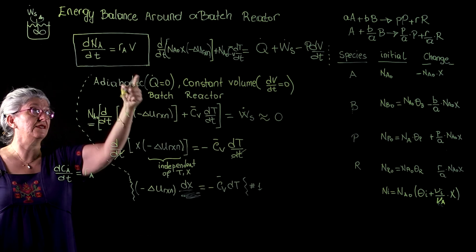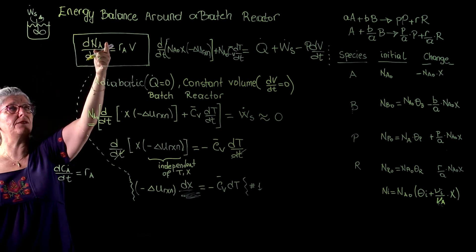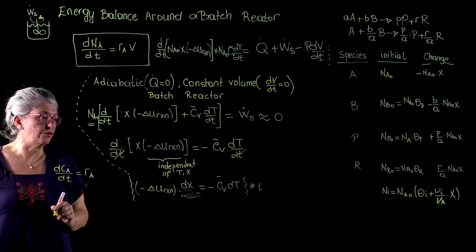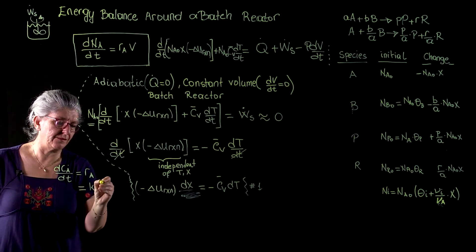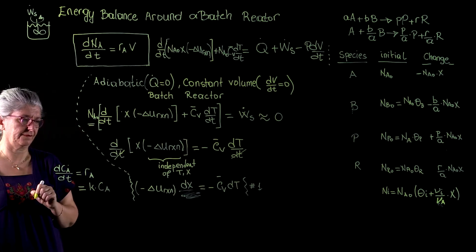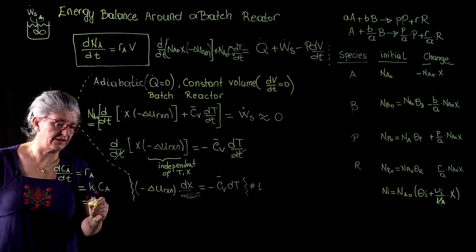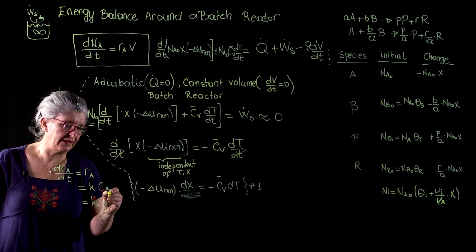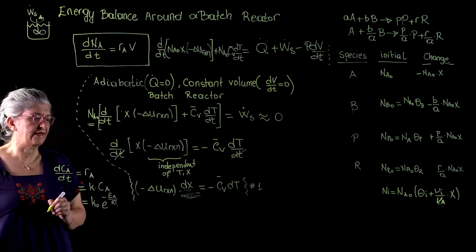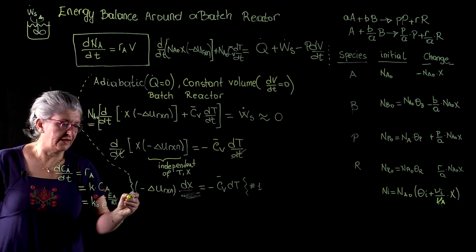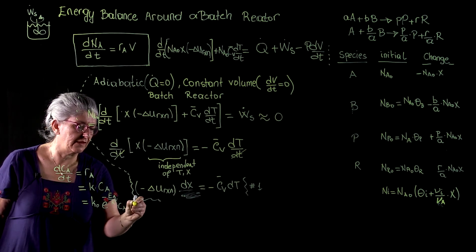This is a constant volume batch reactor. Here we went to the other side of the equation, entered into the derivative, and nA over v became cA. And we are going to solve this problem for a hypothetical first order reaction, which is k times cA. k. And k is equal to k0 e to the minus eA over RT times cA is equal to cA0. k times cA0 times 1 minus x.